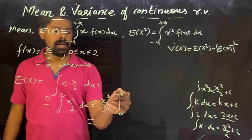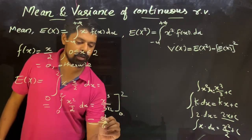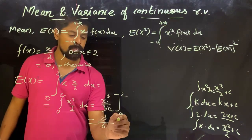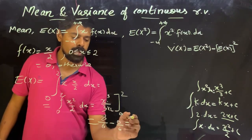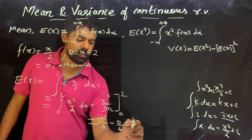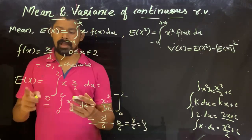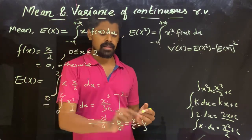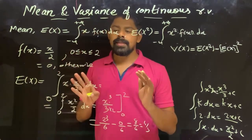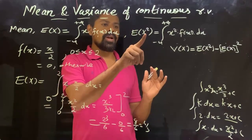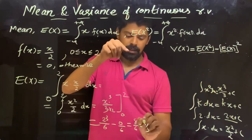We substitute x = 2: 2 cubed divided by 6, minus x = 0: 0 cubed divided by 6. That gives 8 by 6, which equals 4 by 3. So the mean E(x) is equal to 4/3.